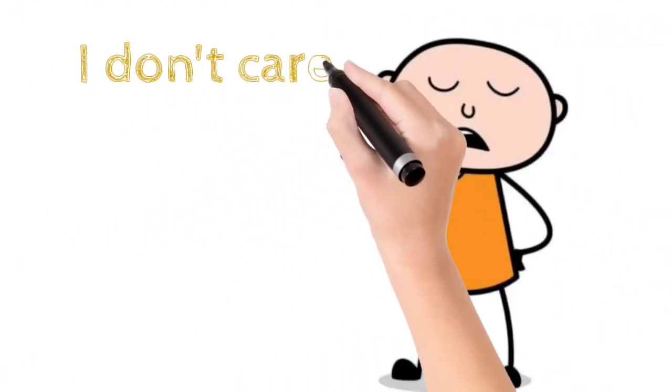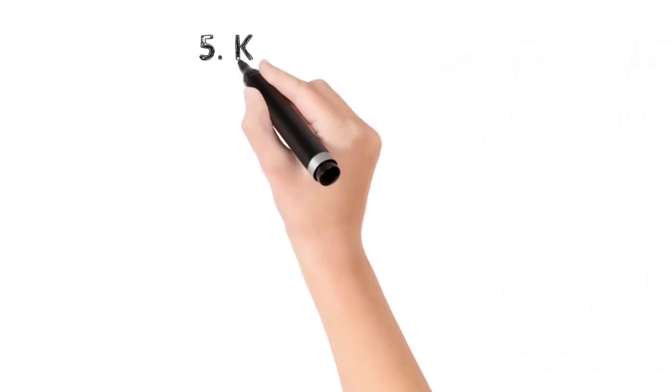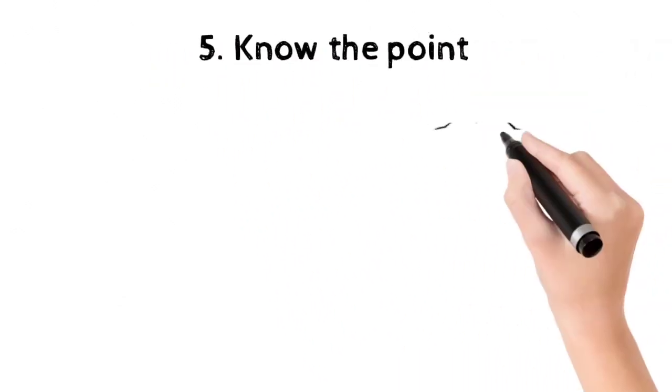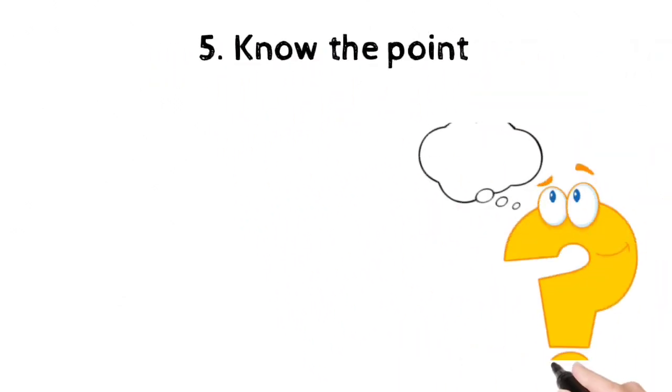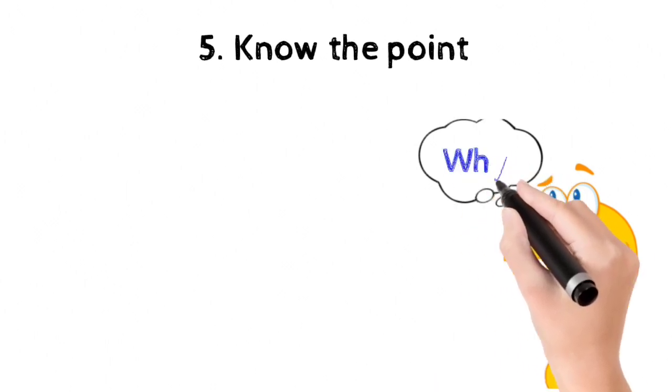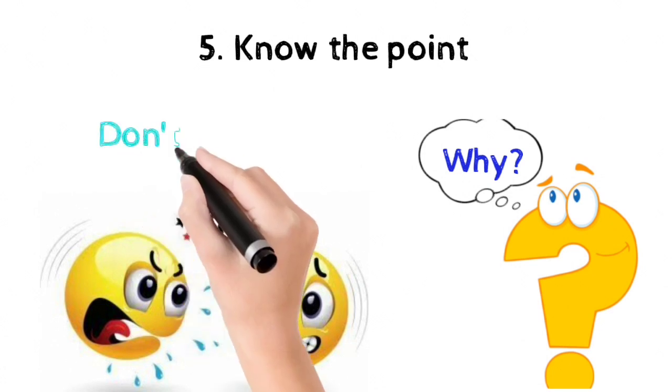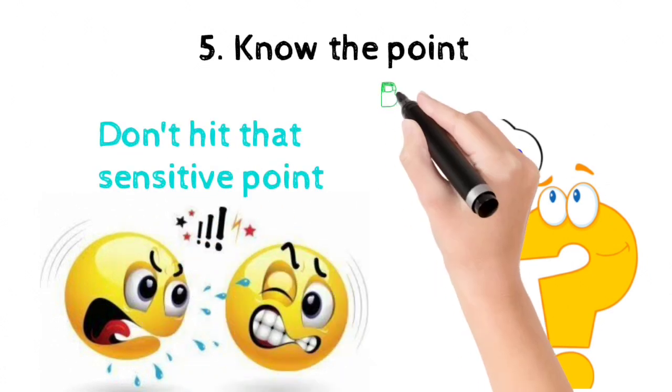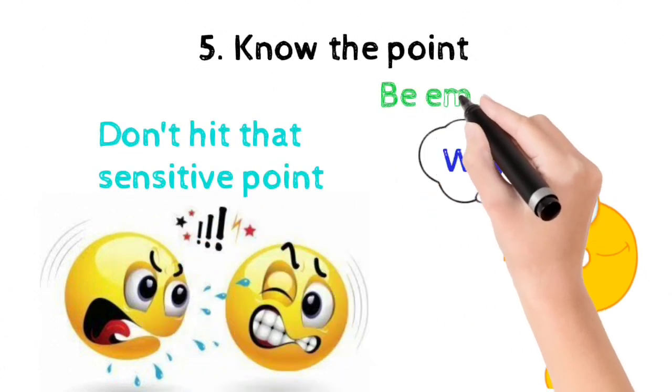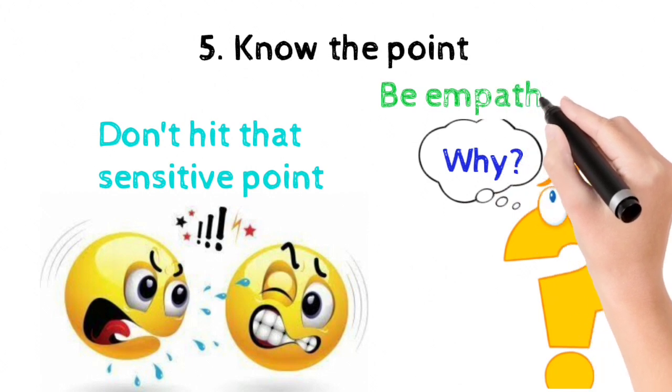Fifth is know the point. Find out what are the reasons of aggression. What hits them most? It's different for everyone. Don't hit that point. If you don't provoke, they won't be aggressive. Be empathetic, right?